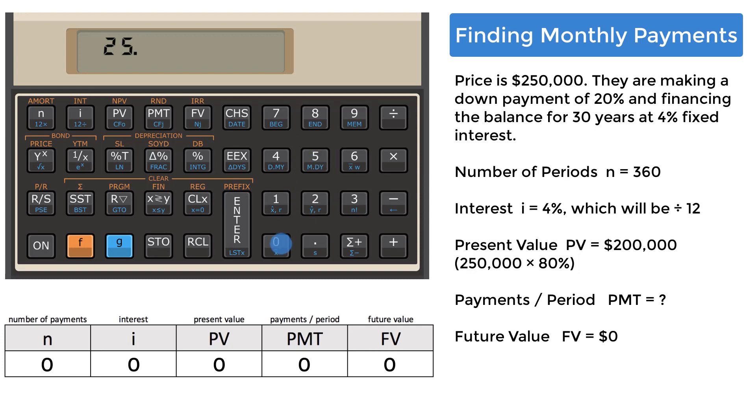Key in 250,000, enter, .8, then press the multiply key. 200,000 will be put into the present value register, press the PV key. The future value will be a paid off mortgage, which means zero. Since a zero is in the FV register when financial registers are cleared, you don't need to manually enter the zero. Just be aware it's already there.